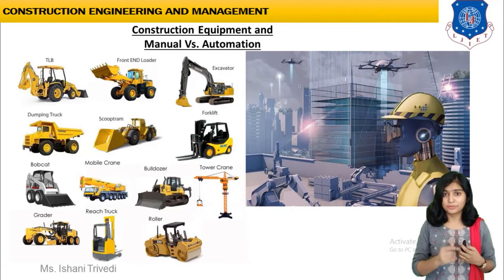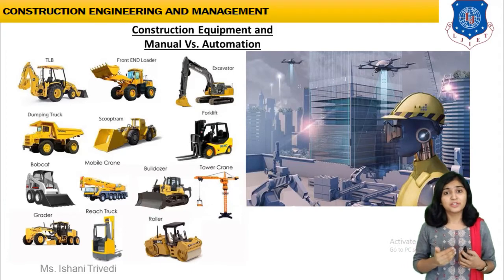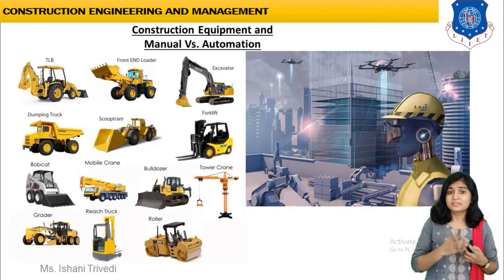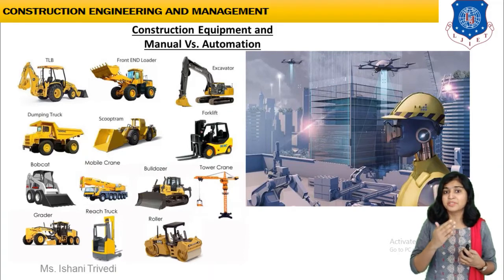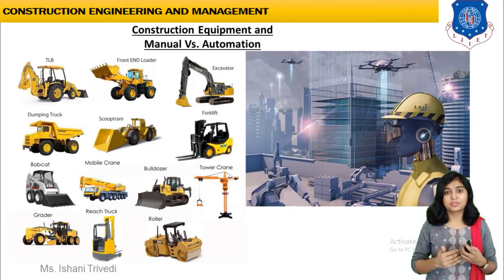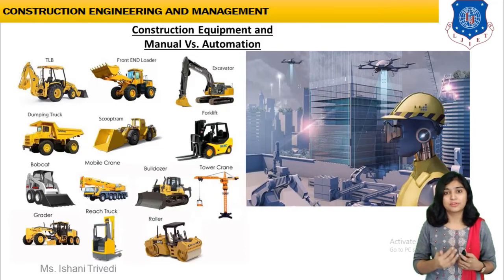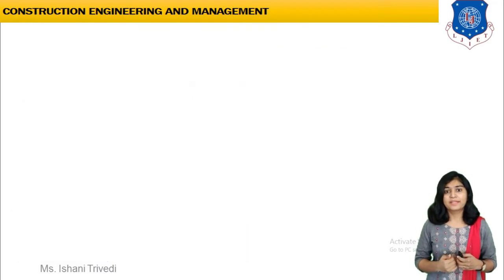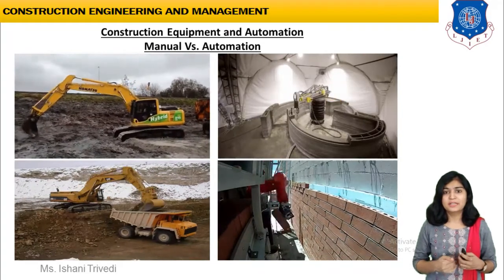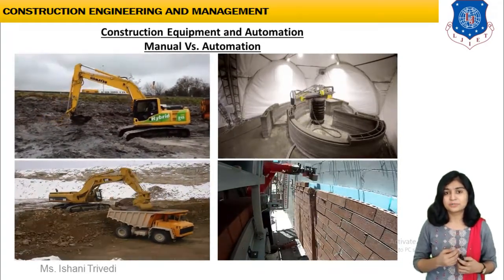Please note: if you talk about an excavator or bulldozer and say 'JCB,' JCB is just a manufacturing company. What we are concerned with are the proper names of the equipment — we call it a backhoe loader, forklift, excavator, or bulldozer. There will be different types of blades in the dozer. We are concerned with the actual names of the equipment.